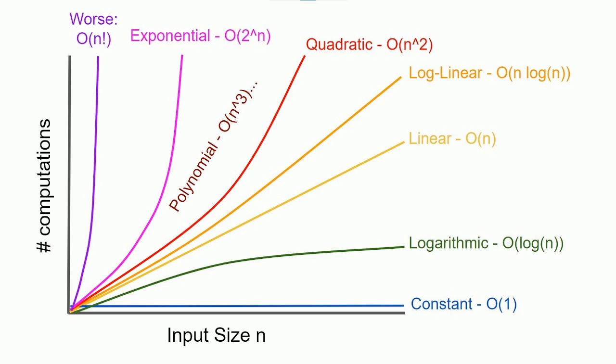Both linear and constant times are considered good. If your computer runs in constant time or linear time for a given problem, that's generally a good speed for a program. But you can get much slower — every time you double the size of the input, the time it takes for the computer program to run might quadruple. That's quadratic time. The time it takes drastically increases compared to the increase in the size of the input, and that's when your computer starts running really slowly, probably due to a slow algorithm.